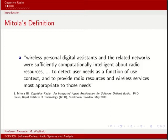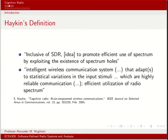There are a variety of cognitive radio definitions. One by Joseph Mitola is: 'A wireless personal digital assistant and related networks were sufficiently computationally intelligent about radio resources to detect user needs as a function of use context and to provide radio resources and wireless services most appropriate to those needs.' Another definition by Simon Haken from McMaster University describes it as an inclusive SDR — the idea to promote efficient use of spectrum by exploiting the existence of spectrum holes — an intelligent wireless communication system that adapts to statistical variations in the input stimuli, targeting highly reliable communications and efficient utilization of radio spectrum.